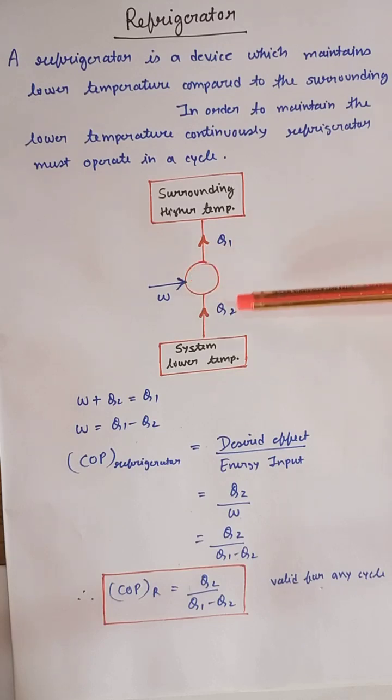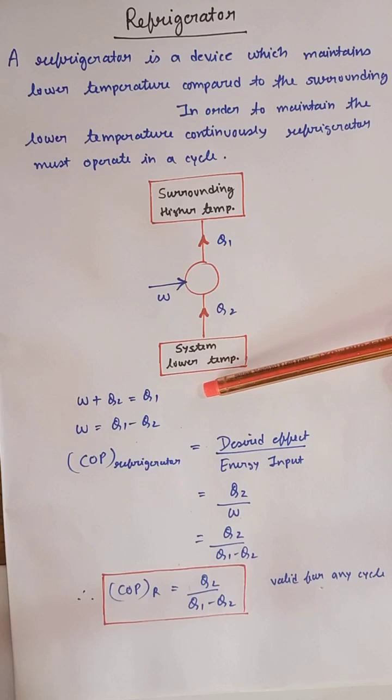Since work has to be done on the refrigerator and the heat extracted from the system is rejected to the surrounding, w plus q₂ equals q₁. So w equals q₁ minus q₂. COP of refrigerator is defined as desired effect upon energy input.